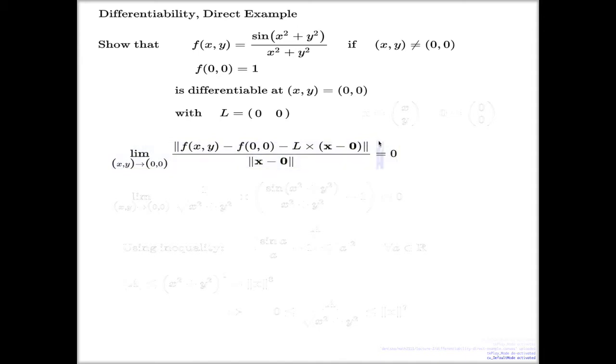We have to test this limit. We have to convince everyone that this is zero. Boldface x, boldface zero here—multiple variable vectors. So I need to test this limit. If I can convince you this is zero, we're done.